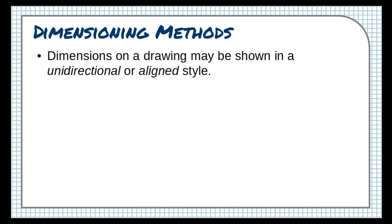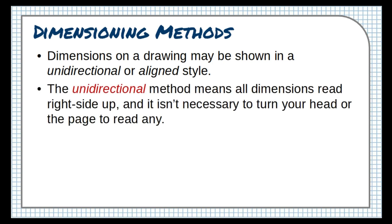Dimensions on a drawing may be shown in unidirectional or aligned style. The unidirectional method means all the dimensions read right-side up, and it isn't necessary to turn your head or the page to read any.